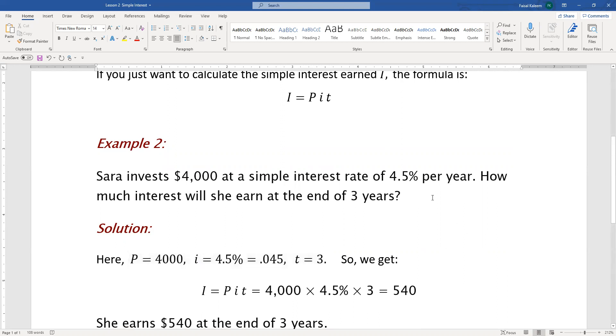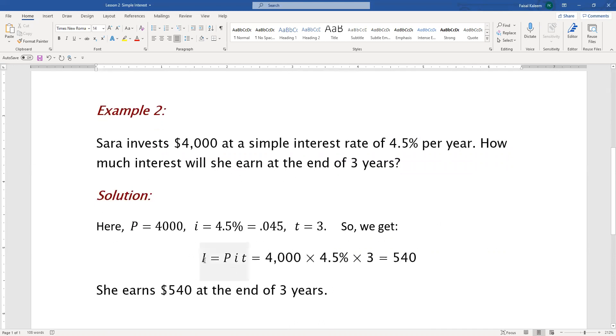And t = 3. The units of t should match the unit of the interest rate. The interest rate is 4.5% per year, so t should be in years. We have to calculate the amount of interest.